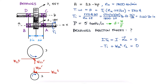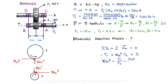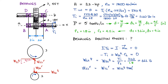With the diametral pitch, we can find the diameters and therefore the radii of the two gears. The tangential interaction force is therefore 622 pounds. With a 20-degree pressure angle, the radial component of the interaction force would be the tangential component times the tangent of 20 degrees.